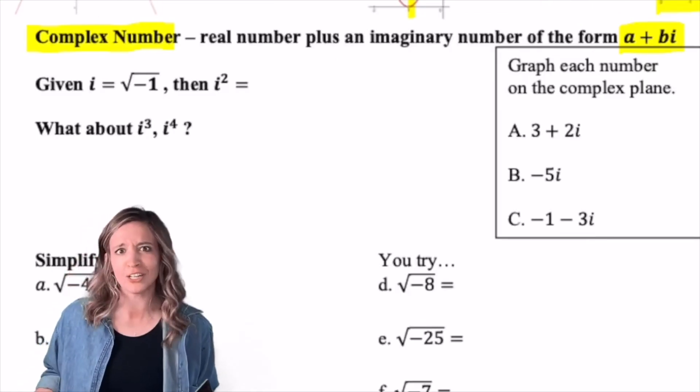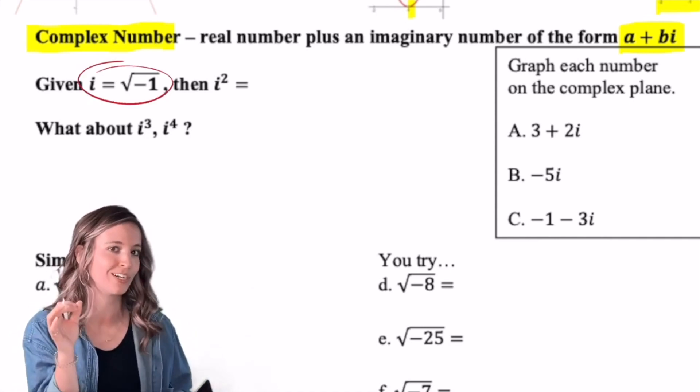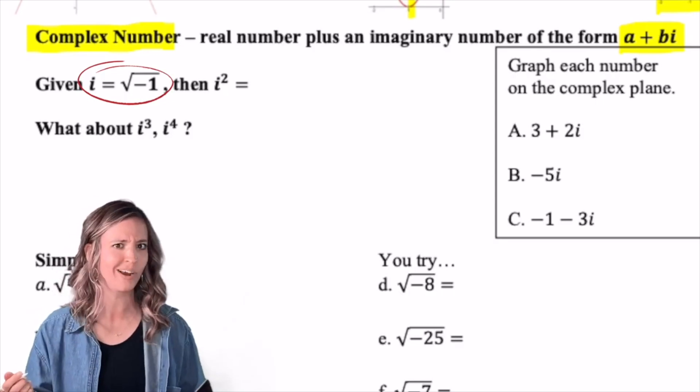So now where do these imaginary numbers come from? Well, negatives are underneath our square roots. So i, this little imaginary number i, is equal to the square root of negative one. So what would i squared then be?